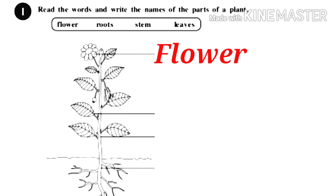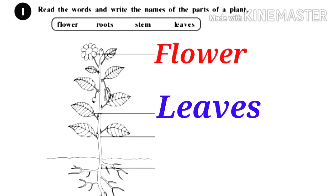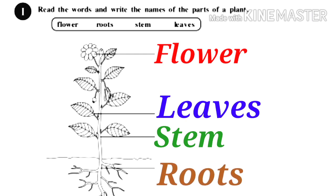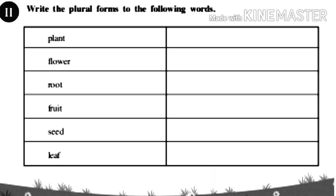Flower, leaves, stem, roots — these are the parts of the plant. Write the plural forms of the following words: plant, flower, root, fruit, seed, leaf. Plant is singular, plants. Flower...